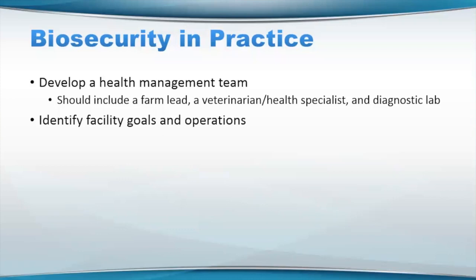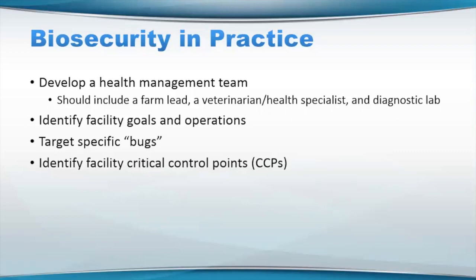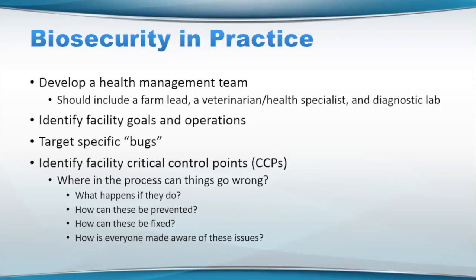Identify facility goals and operations — what are you and your managers really trying to do with regard to production? You want to really consider targeting specific bugs. It's really important for you to know what pathogens are of importance for your specific species. Just like with HACCPs, it's really important in biosecurity to identify facility critical control points or CCPs. These include anything that can go wrong in the process: knowing what to do if they happen, how they can be prevented, how these things can be fixed, and how you communicate and make everyone aware of these issues.